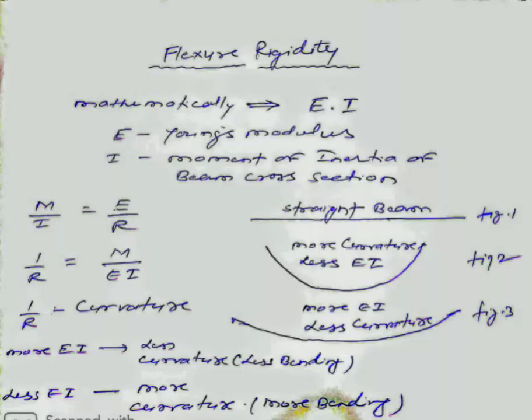By using the bending formula, we can write M/I equals E/R, where 1/R represents the curvature of the beam after deformation.